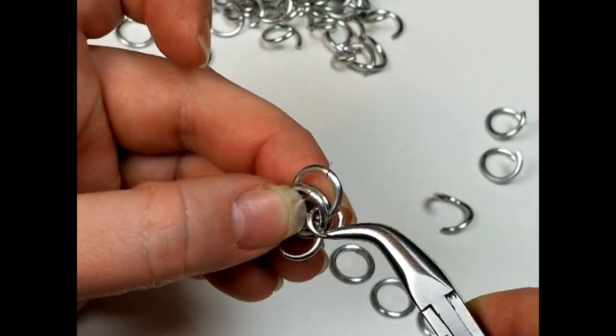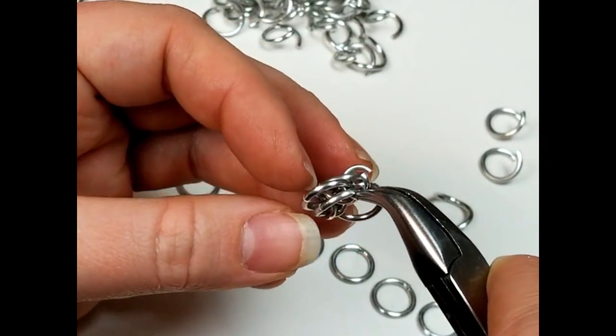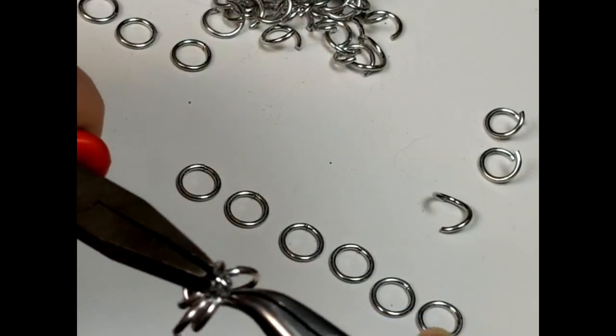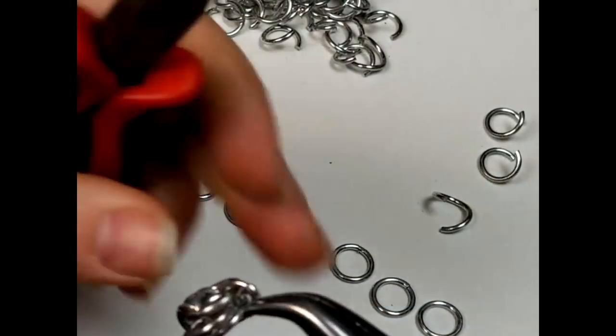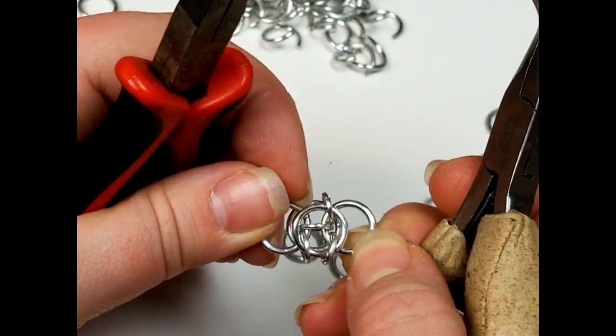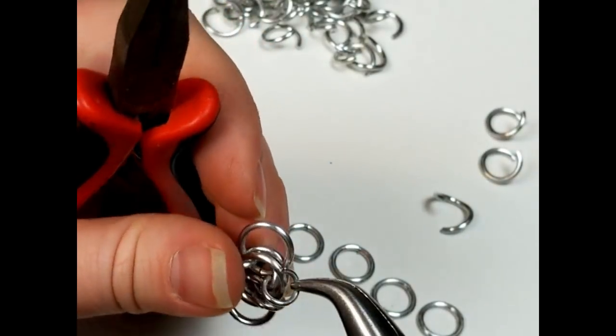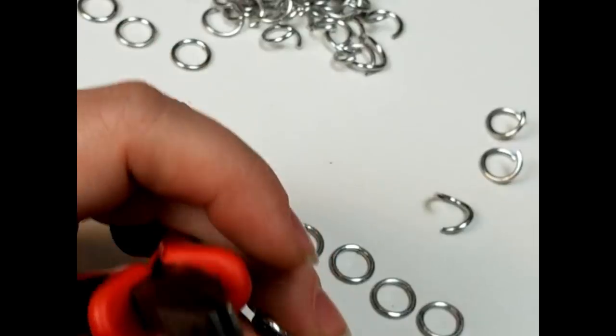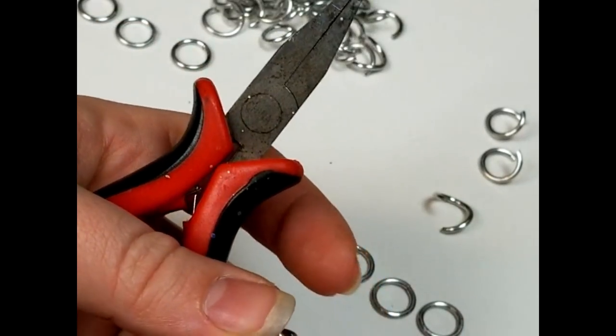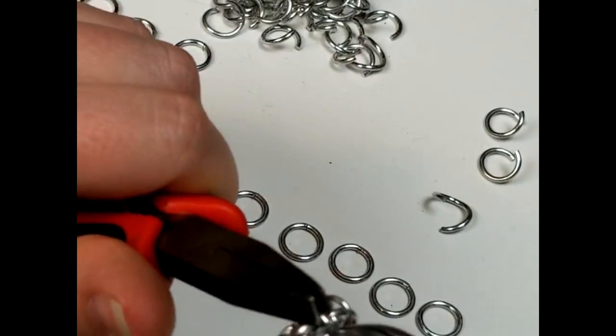Just threading through. One, two, and three. You want to get through all three layers. And close. And then do the same thing right there. So, you're going to end up with a total of four of these rings. There we go. And close.